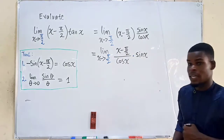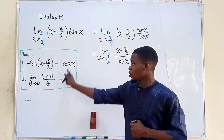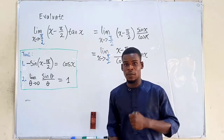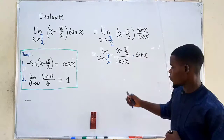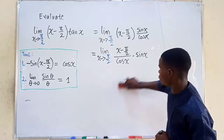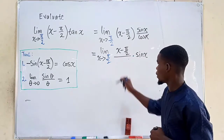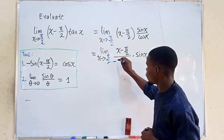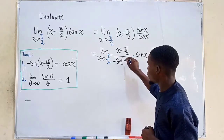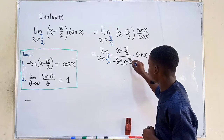Now we're going to make a substitution using the first tool: cosine of x is the same as negative sine of (x minus π/2). So in place of cosine of x we put negative sine of (x minus π/2).